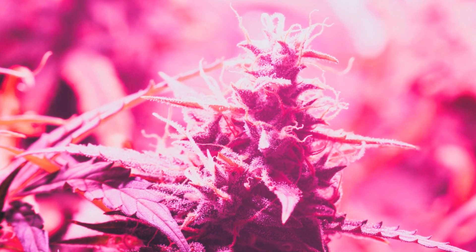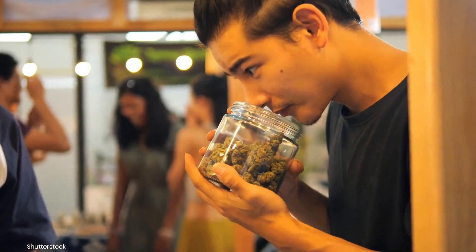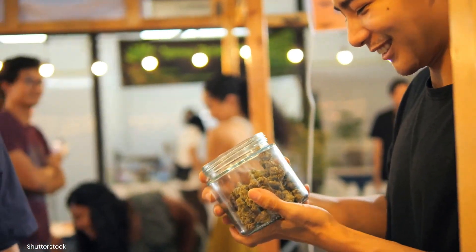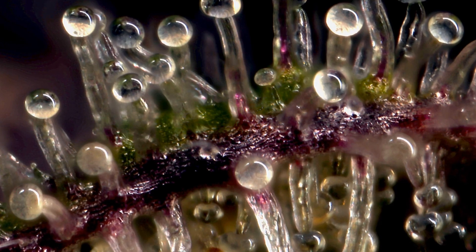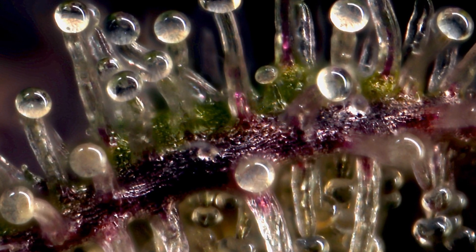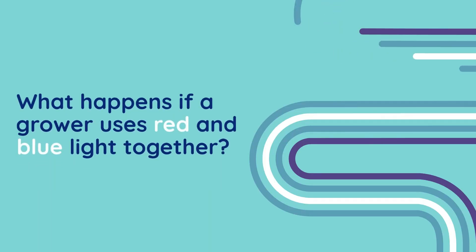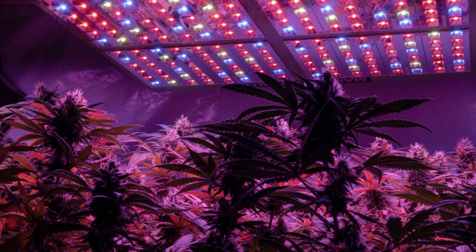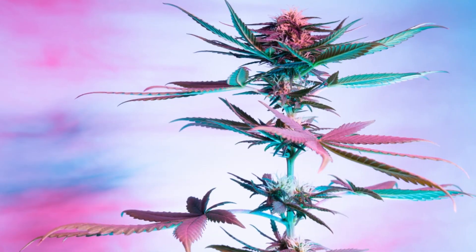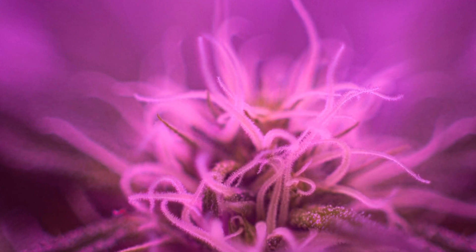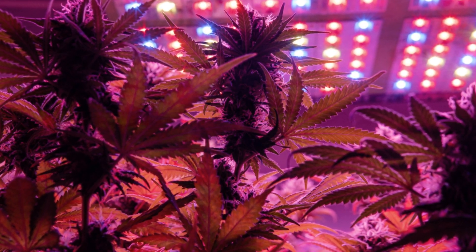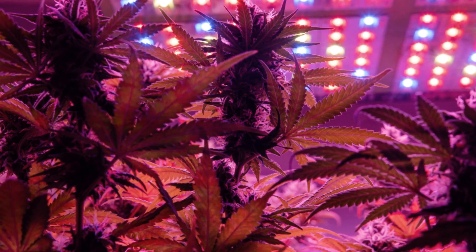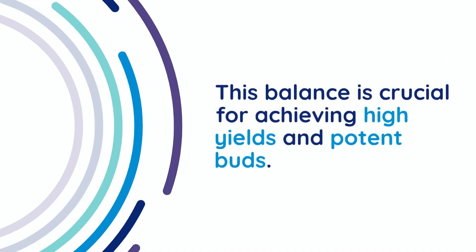This helps the plant develop larger, denser buds, which are essential for a high yield. Red light also improves flower quality by influencing the synthesis of secondary metabolites like terpenes and cannabinoids, which are responsible for the aroma, flavor, and potency of cannabis buds — more red light during flowering can lead to buds with higher concentrations of these desirable compounds. When blue and red lights are combined, they create a synergistic effect: blue light promotes healthy leaf and stem development while red light encourages flowering and bud formation, providing a balanced spectrum that meets the plant's needs throughout its life cycle and maximizing both bud production and overall yield.